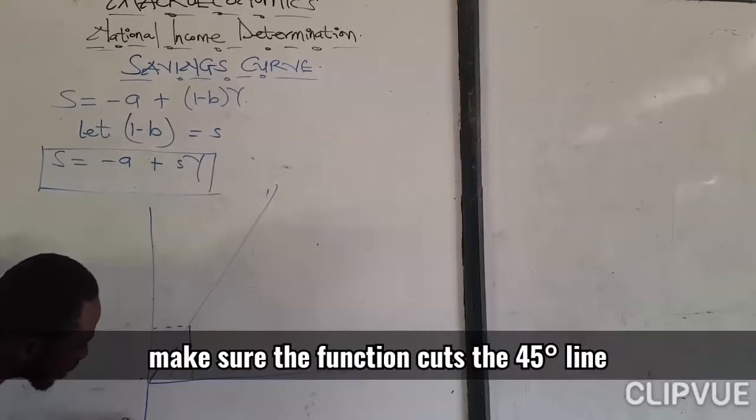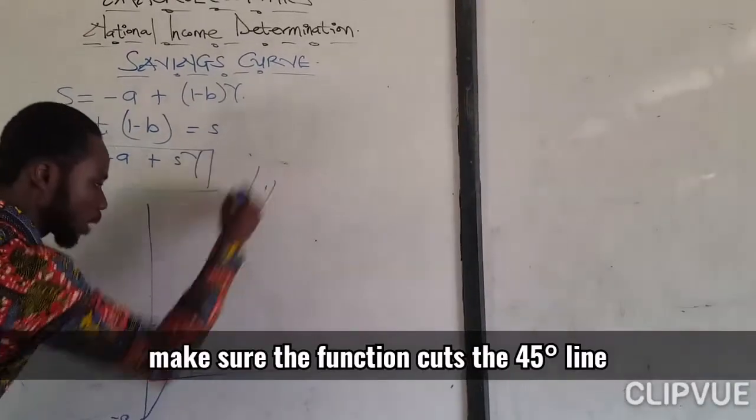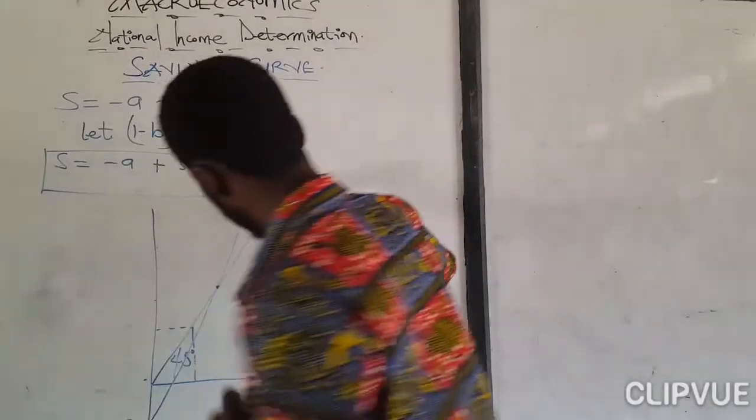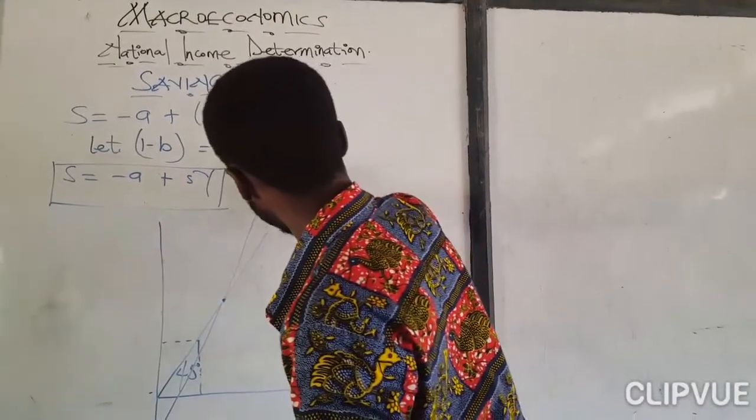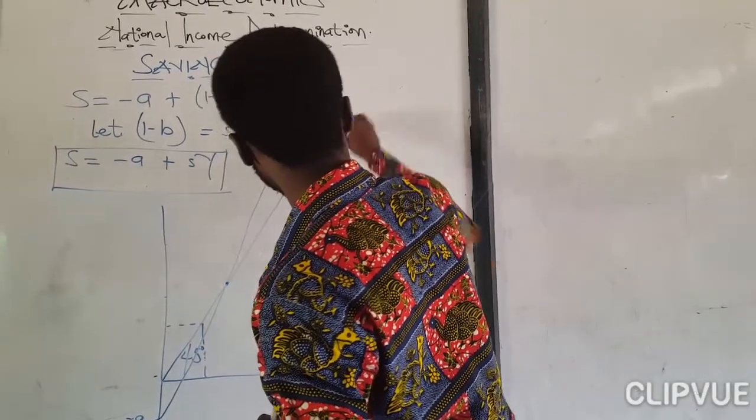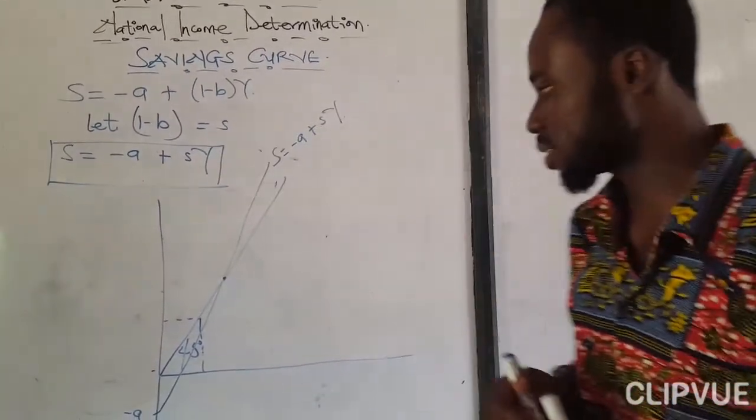So if you are drawing it, let it cut the 45 degrees line, to be like this. It will cut it here. So this is our savings curve, S equal to negative a plus sY. This is our savings curve.